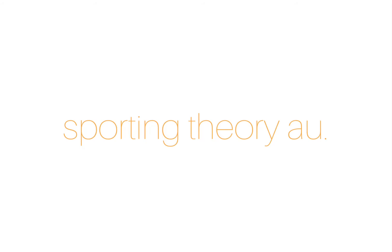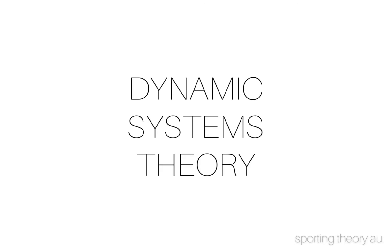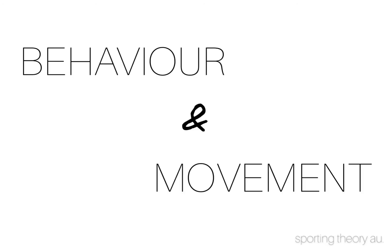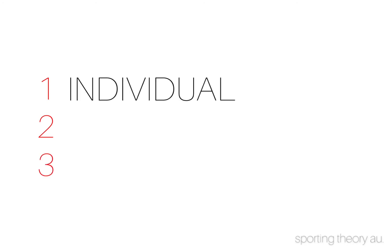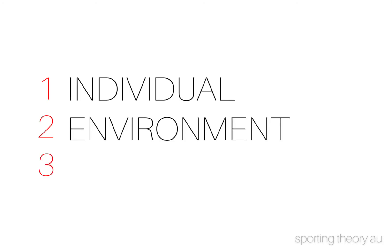Hi everyone, welcome back to our channel. In today's video we will be reflecting on the Dynamic Systems Theory and how its concepts influence each other to enable the emergence of behaviour and movement. The Dynamic Systems Theory consists of three interrelated constraints which enables motor control and skill acquisition. These constraints identify as the individual, environment and task.